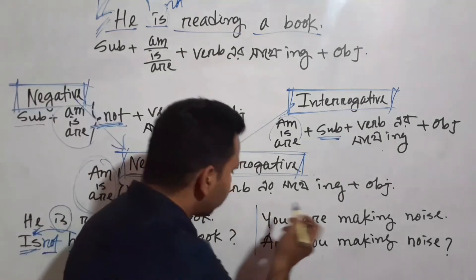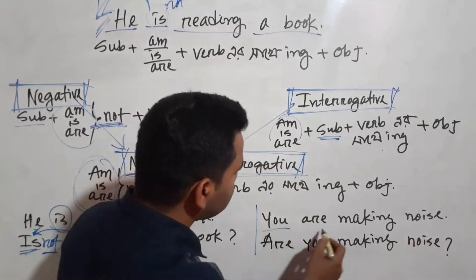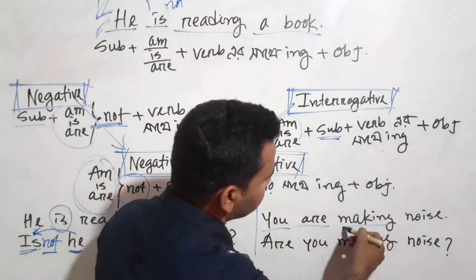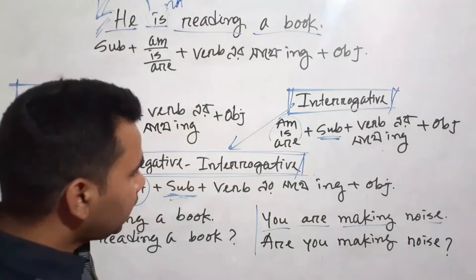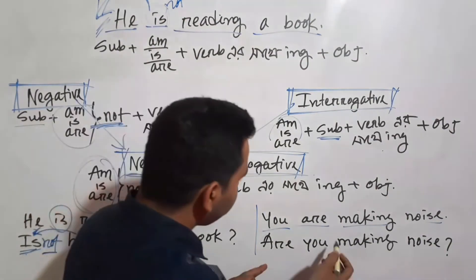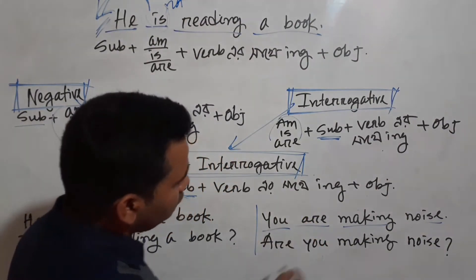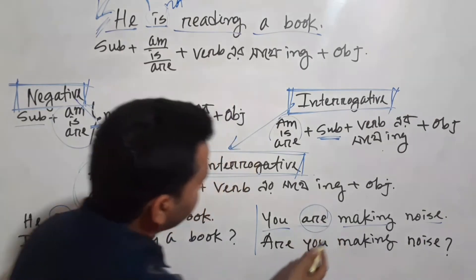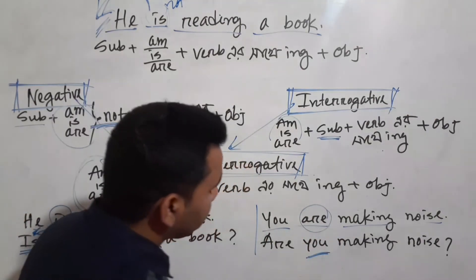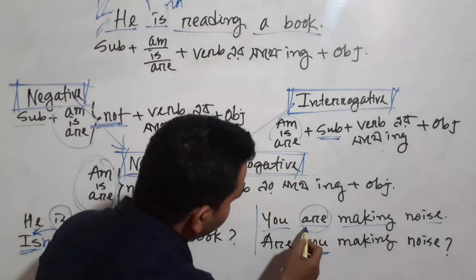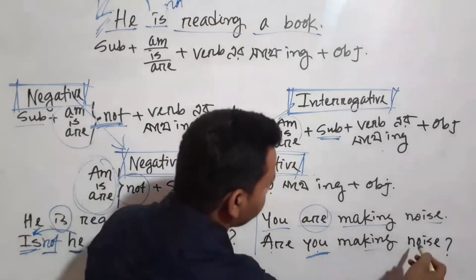For example: 'You are making noise.' This is Subject + Auxiliary + Verb+ING + Object — that is the present continuous structure. To ask the interrogative question, you place the auxiliary before the subject: 'Are you making noise?'